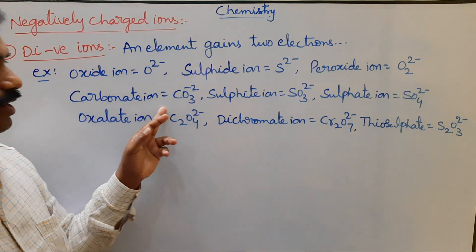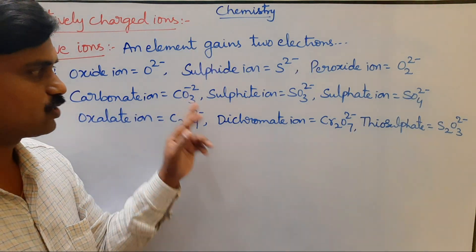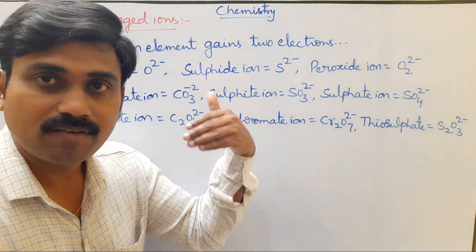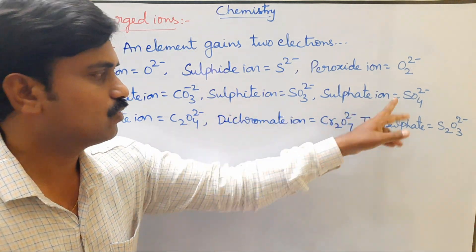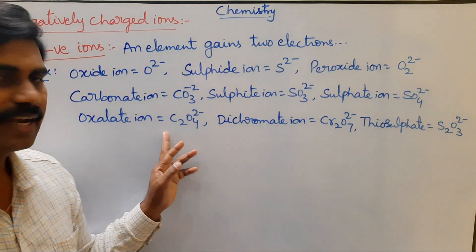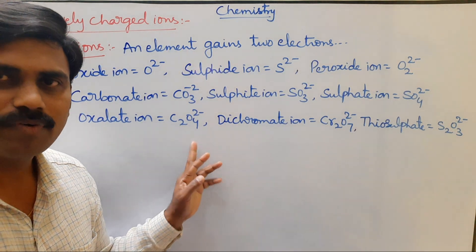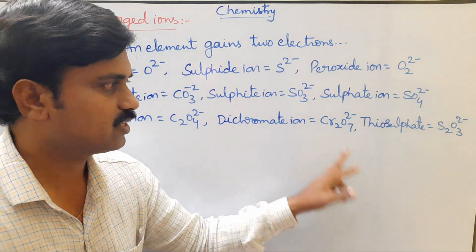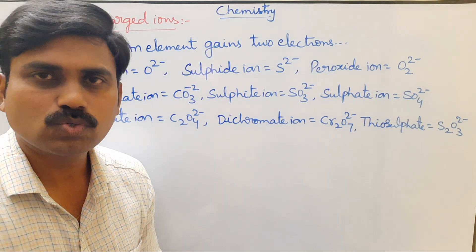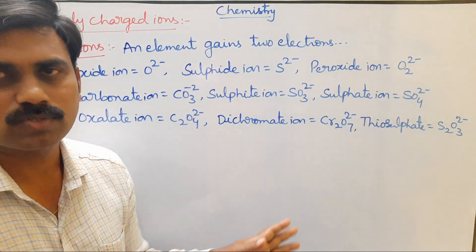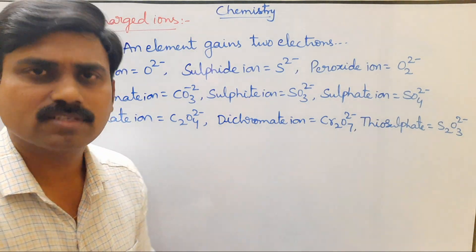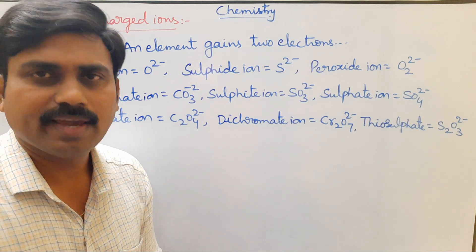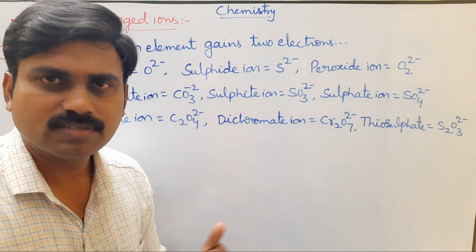Di-negatively charged radical ions: carbonate ion CO₃²⁻, sulfite ion SO₃²⁻, sulfate ion SO₄²⁻, oxalate ion C₂O₄²⁻, dichromate ion Cr₂O₇²⁻, thiosulfate ion S₂O₃²⁻. These are the best examples of di-negatively charged ions.